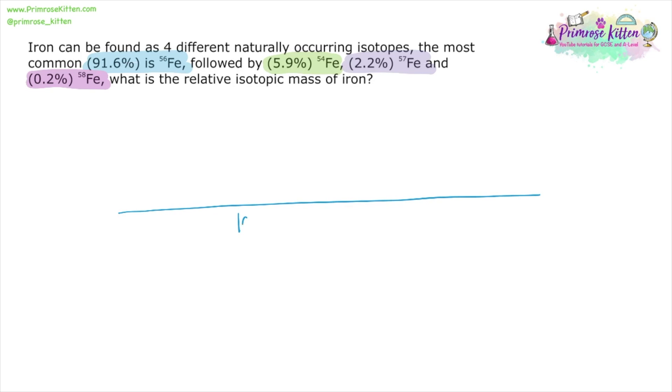Now a few different isotopes here, but we treat it exactly the same. All over 100. The most common isotope 96.1 times 56 plus the next isotope 55.9 times 54 plus 2.2 times 57 plus 0.2 times 58.